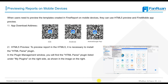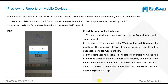When previewing reports on mobile devices, you need to prepare the environment by switching the PC and mobile devices to the same network environment. There are two methods: one is to set up a mobile hotspot on the PC and connect the mobile device to that hotspot network, and the other is to connect both the PC and mobile device to the same Wi-Fi network.